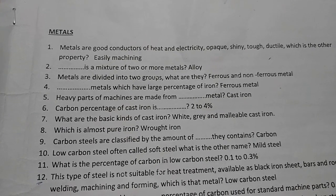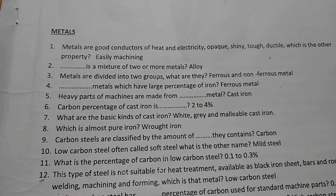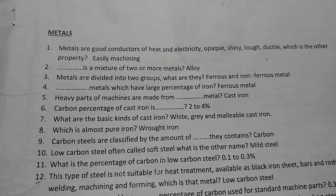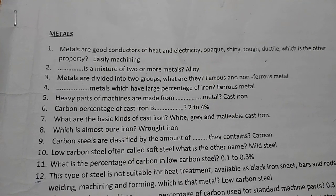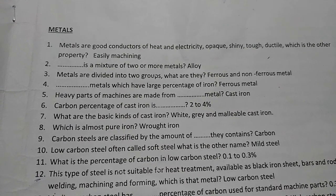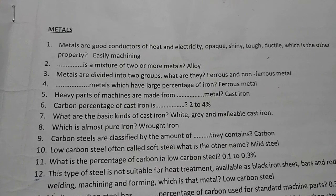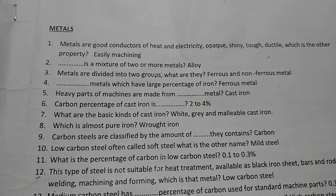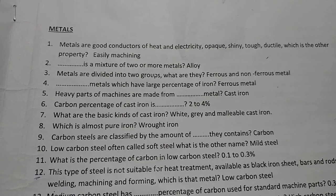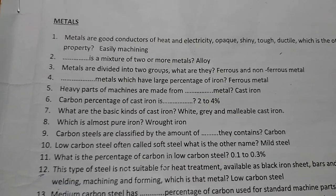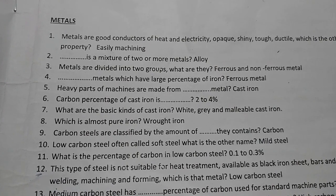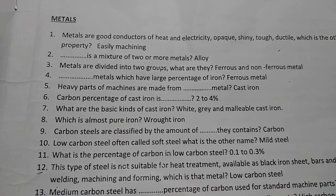Metals are divided into two groups: ferrous and non-ferrous metals. Ferrous metals are those which have a large percentage of iron. Heavy parts of machines are made from which metal?